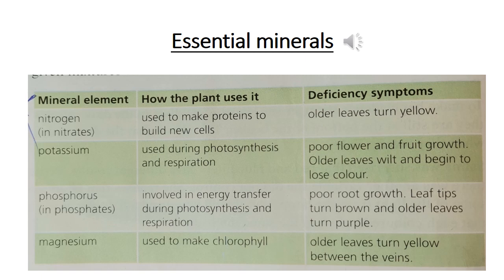The essential mineral elements are nitrogen, potassium, phosphorus, and magnesium. Nitrogen is used to make proteins to build new cells. Its deficiency symptom — meaning a lack or shortage — is that older leaves turn yellow. Potassium is used during photosynthesis and respiration.